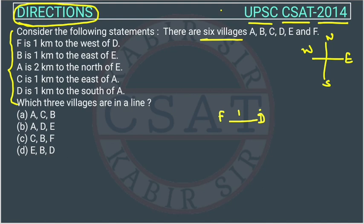Now we need to find a statement that uses F or D as a reference point. In the second statement, B is 1 kilometer to the east of E — but we don't know E yet, so it's not useful right now. The third statement uses A and E, and the fourth uses C and A — also not useful because we haven't drawn those points yet.